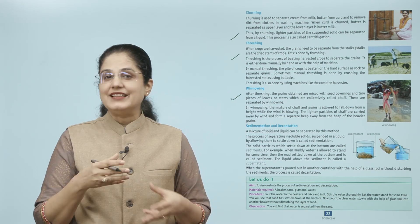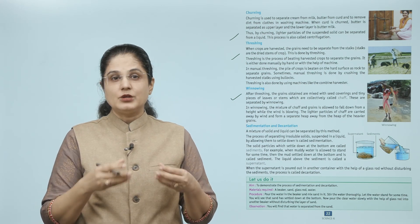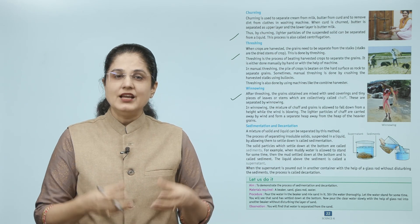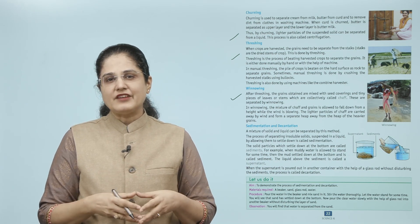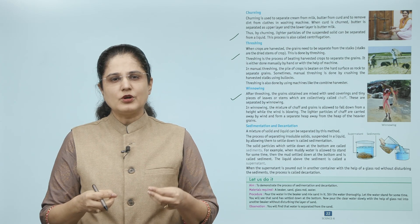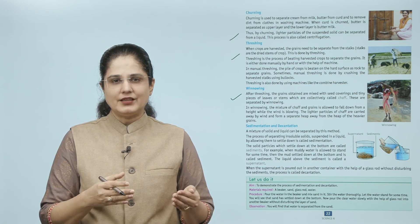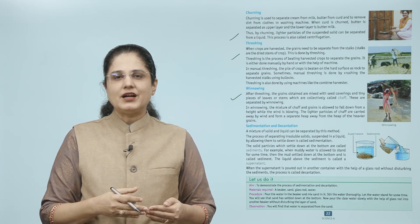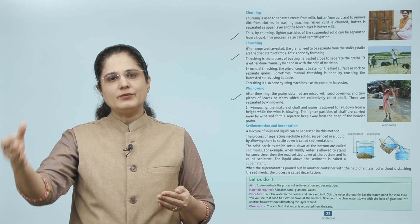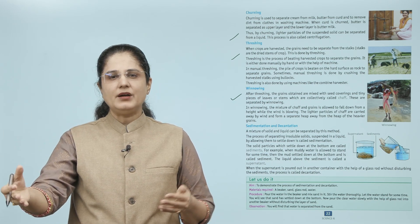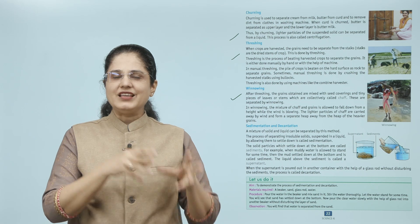Next we have winnowing. After threshing, the grains obtained are mixed with seed coverings and tiny pieces of leaves or stems, collectively called chaff. These are separated by winnowing. In winnowing, a mixture of chaff and grains is allowed to fall down from a height while the wind is blowing, so the lighter particles of chaff are carried away by wind.